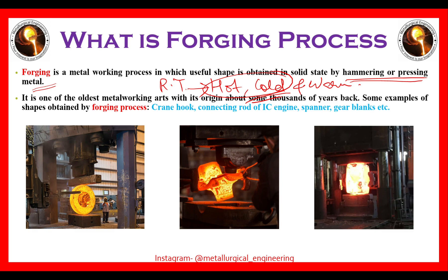Some examples of shapes obtained by the forging process are crane hooks, connecting rods of IC engines, spanners, gear blanks, and others. These are a few pictures related to forging processes in which different shapes are obtained.